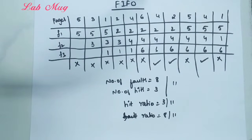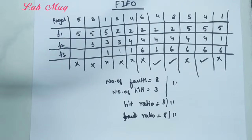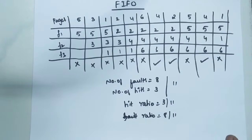So this is the output by the First In First Out algorithm. We covered the introduction to page replacement algorithm and the FIFO algorithm. Next, we will look at the second algorithm, which is LRU — Least Recently Used — in the next class. This is the First In First Out algorithm. Thank you.